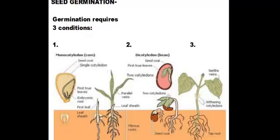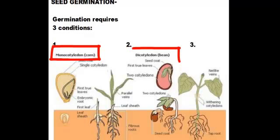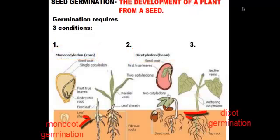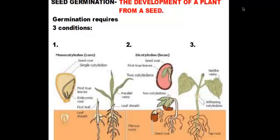All right, so here we have the germination of two types of seeds. We have our monocot here on the left and our dicot here on the right. But before we talk about that, what you need to know is that the word germination is the development of a plant from a seed. As a seed sprouts and grows into a plant, that is when the seed starts to germinate. In order to get a seed to successfully germinate, you need three conditions that need to be right.